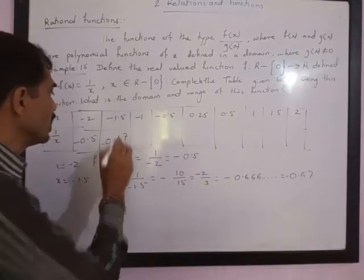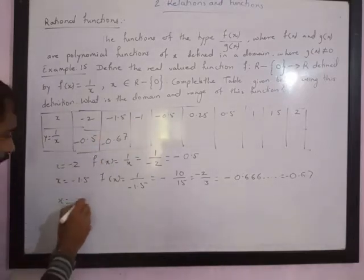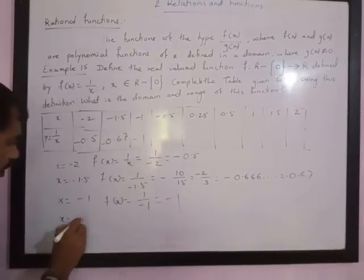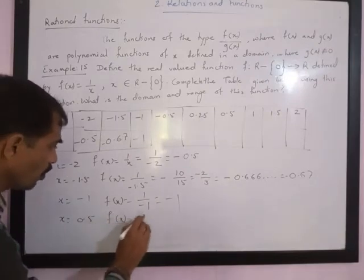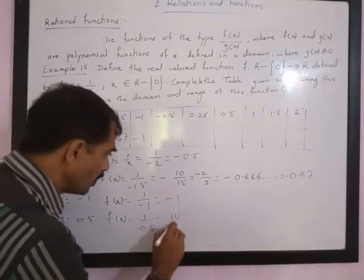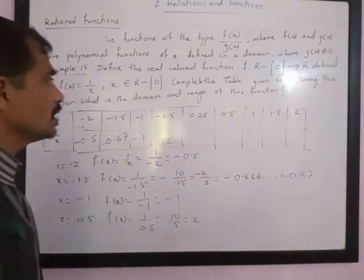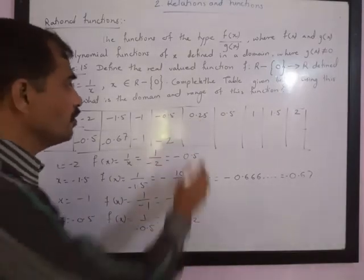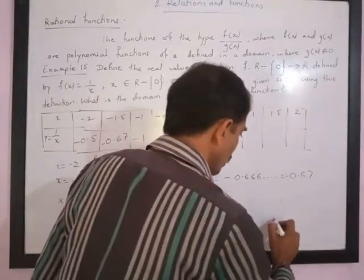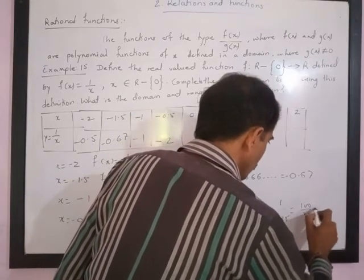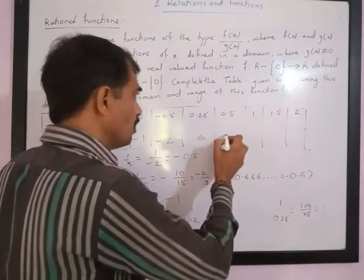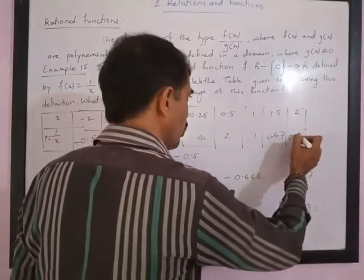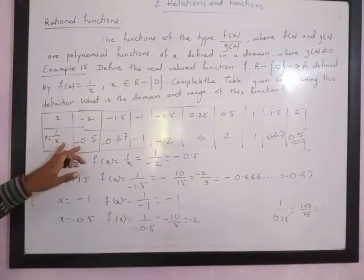When x = negative 1, f(-1) = -1. When x = 0.25: f(0.25) = 1/0.25 = 4. So the table gives values: for x = 0.25, y = 4; for x = 0.5, y = 2; for x = 1, y = 1; for x = negative 0.5, y = negative 2; for x = negative 2, y = negative 0.5. So y = 1/x.